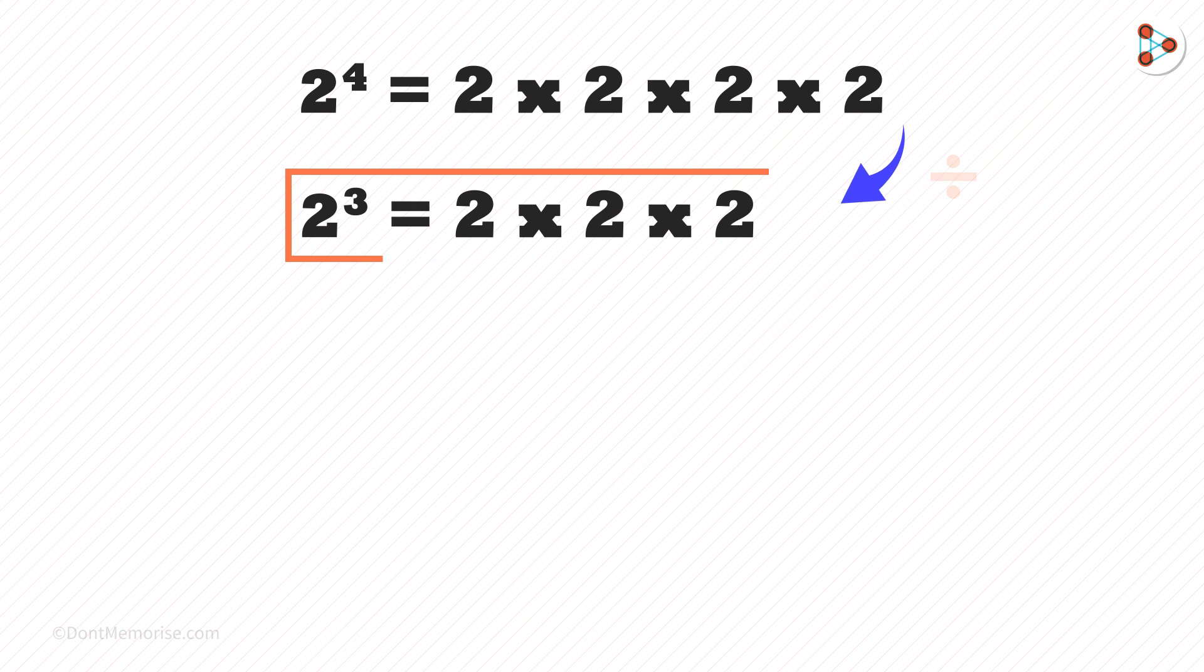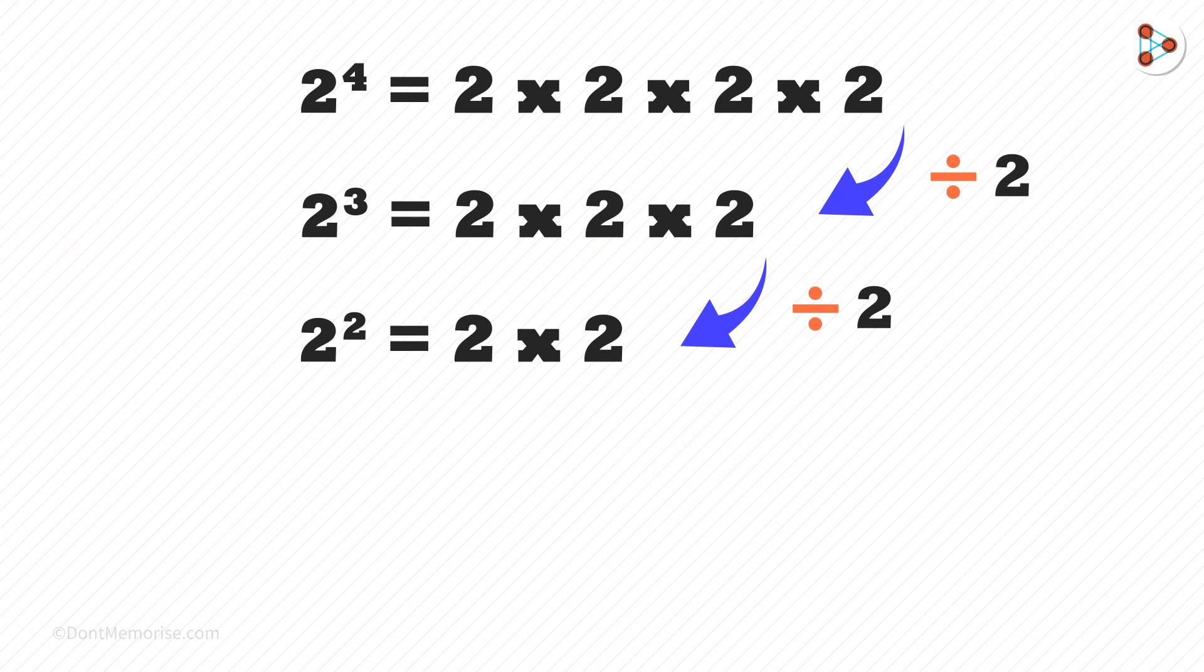What did we do in this step? We divided 2 from the above step. Similarly, 2 to the power 2 is 2 multiplied by 2. We see that we have again divided by 2.